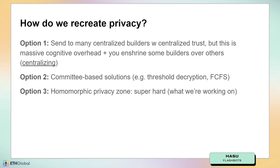So how do we recreate privacy in a decentralized way? One option is centralized block builders competing with each other in a sort of competitive market. But the downside is that these builders all have their own unique form of trust, and as a user or as a blockchain, you need to decide which builder you trust. This really risks enshrining some builders over others and creates a big incentive for vertical integration between different supply chain participants. So this option is very centralized.